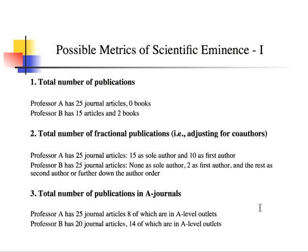So, possible metrics of scientific eminence. The oldest or most common way in the past, when we didn't have quite as sophisticated a set of bibliometrics, was to simply count the number of publications that a professor had. For example, Professor A might have 25 journal articles published and zero books, whereas Professor B had 15 articles and two books.